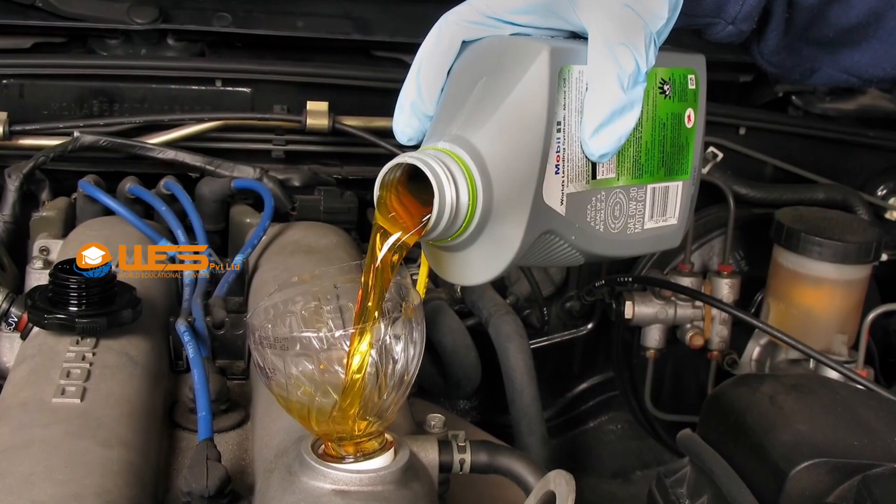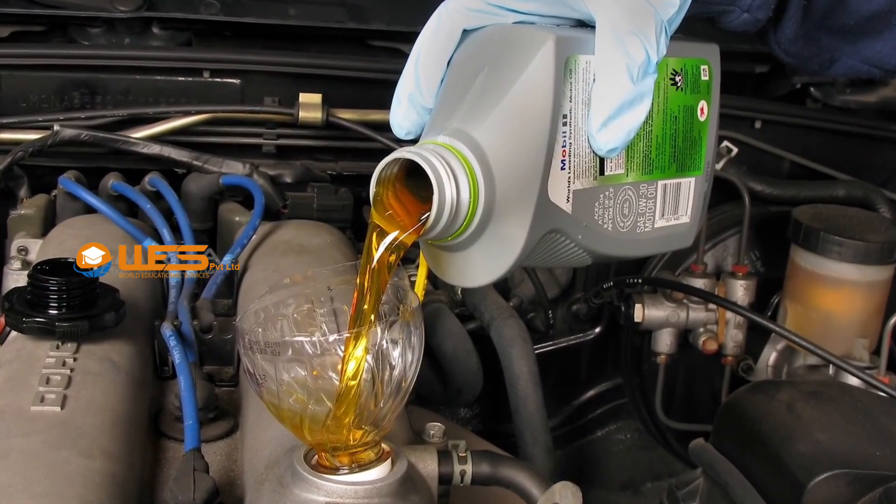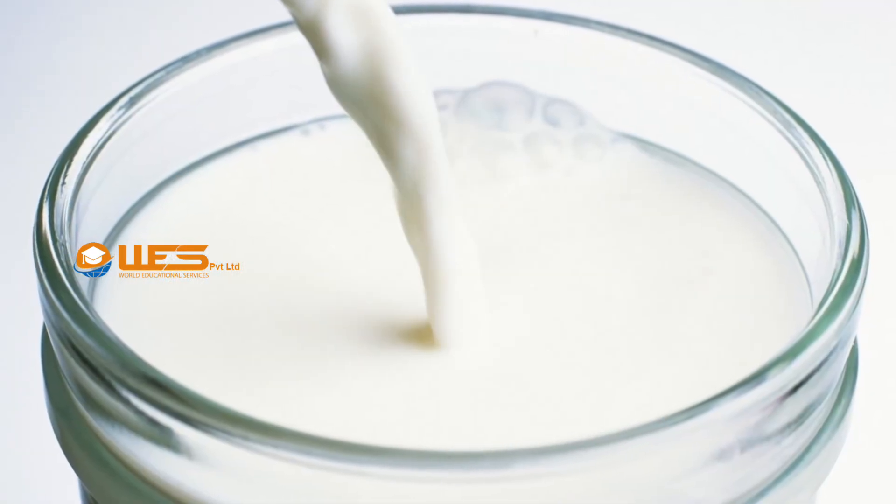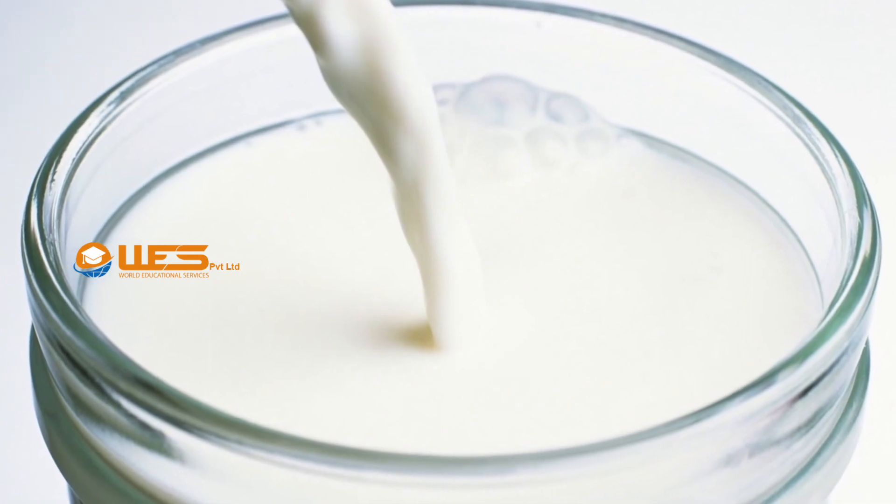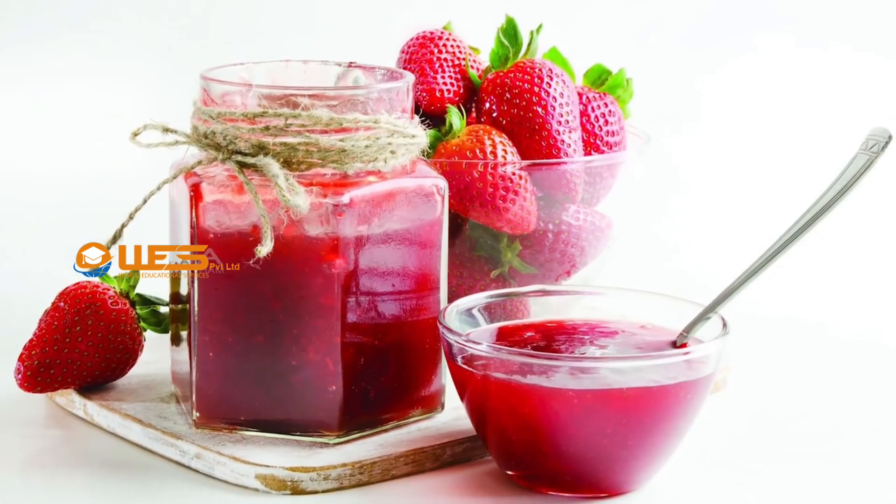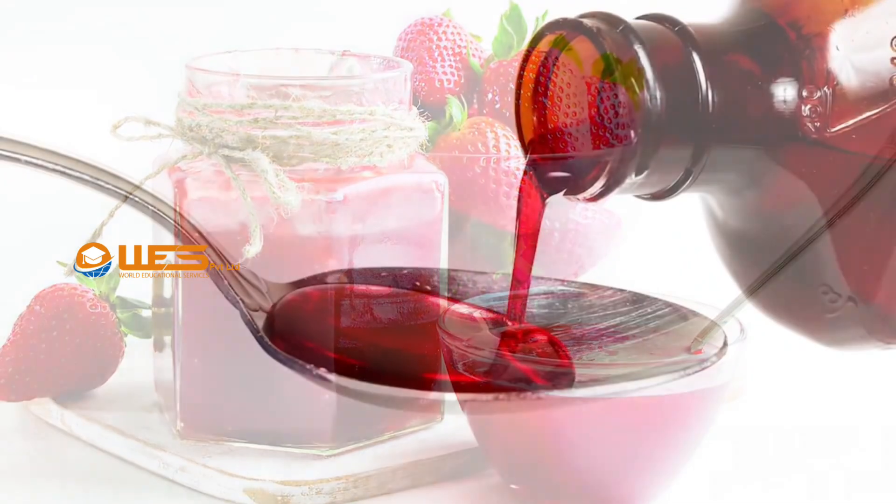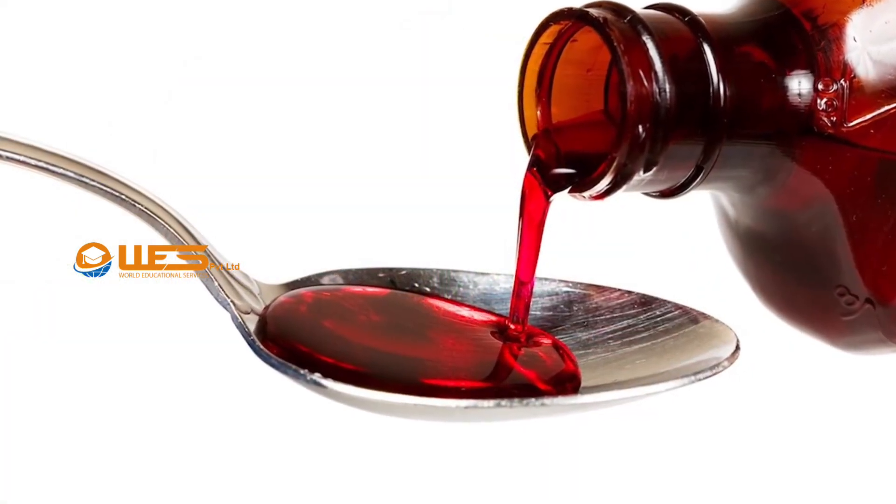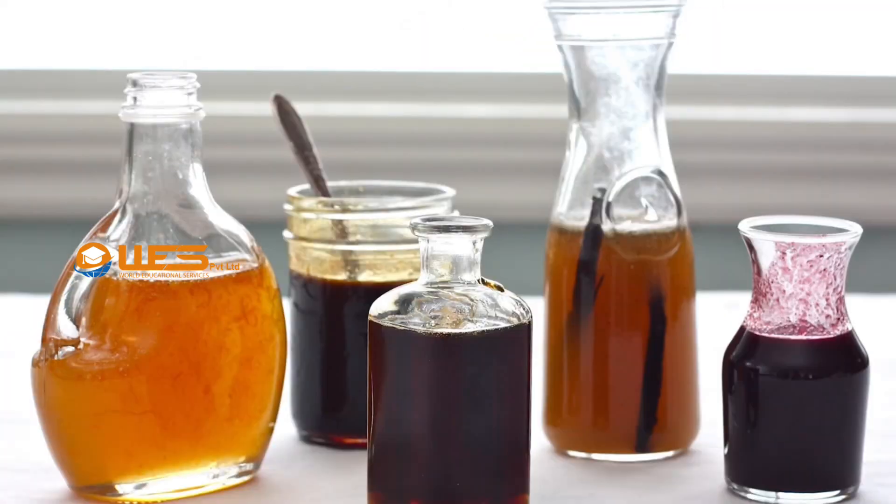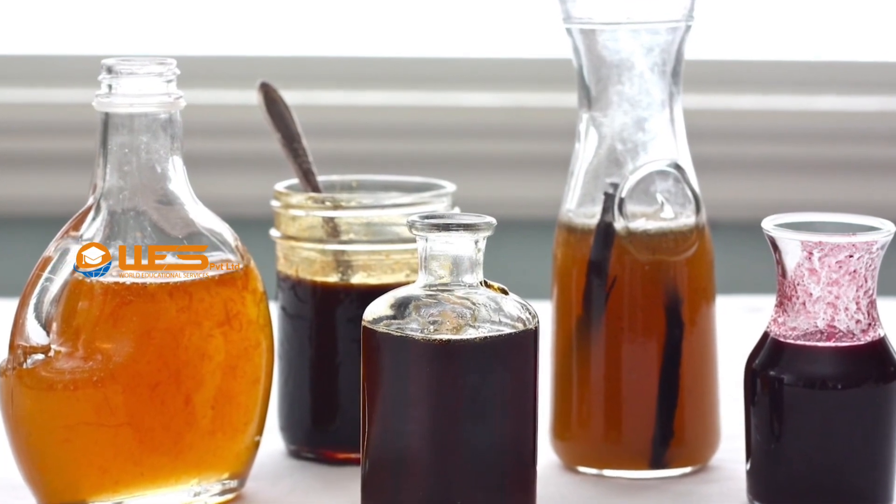Measuring the flow of engine oil under different temperature conditions, analyzing the flow properties of milk to design suitable piping systems, and checking the viscosity of jams and syrups to ensure batch consistency are some areas where we use falling sphere viscometers.